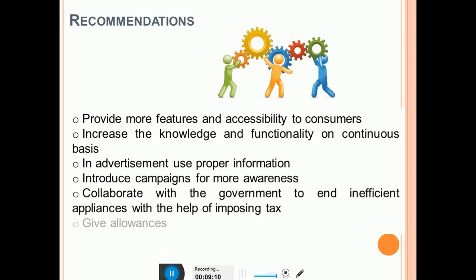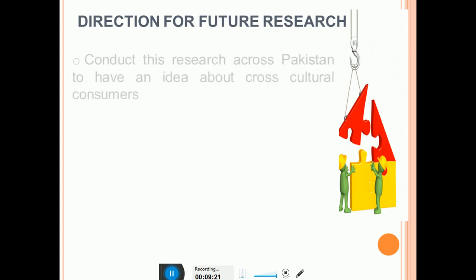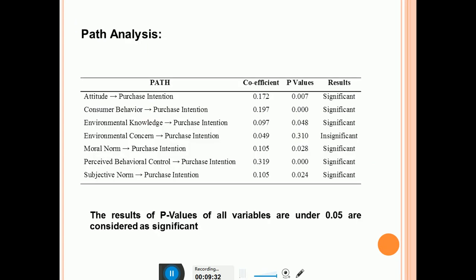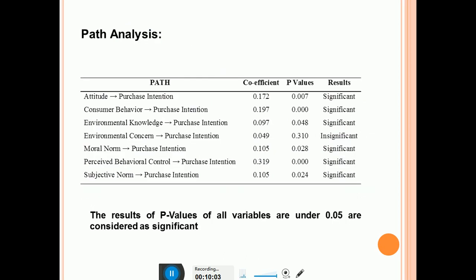Try to address each variable's justification with citation. Then include a slide on directions for future research, which is also called the limitations of the study. You must know: if attitude is significant on purchase intention, what would you recommend to the industry? Similarly, if it is insignificant, what would be the reason for getting insignificant results? You must remember citations that identify similar results.